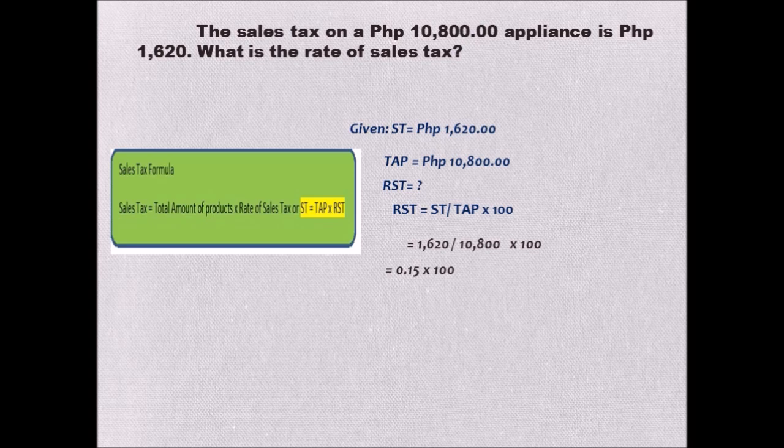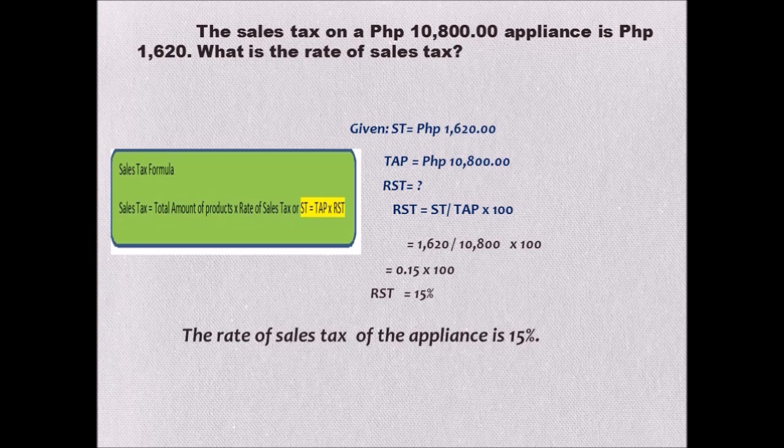That is 0.15 times 100, so the rate of sales tax is equal to 15 percent. We express it in percent because it is about rate. The rate of sales tax of the appliance is 15 percent.